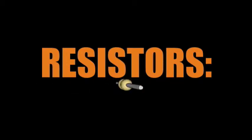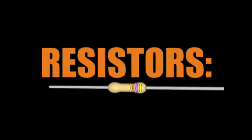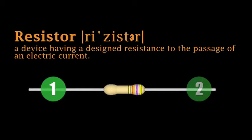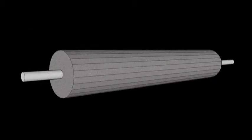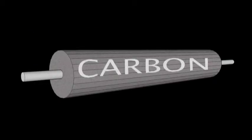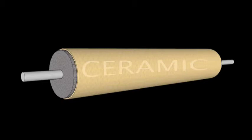A resistor is an electrical component that resists the flow of electricity. Resistors are made of two conductive leads connected by material that limits the flow of electricity. The most common type of resistor is made from carbon particles packed tightly inside of a ceramic tube.